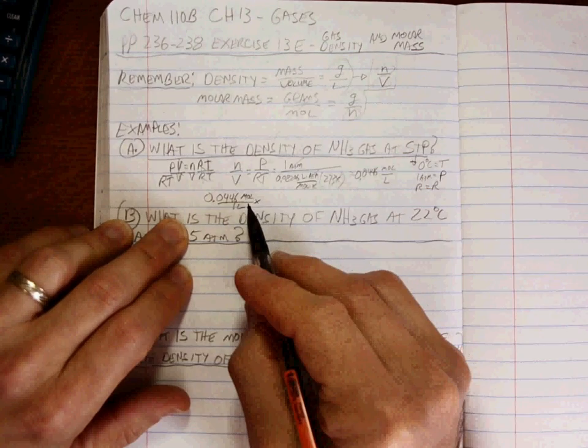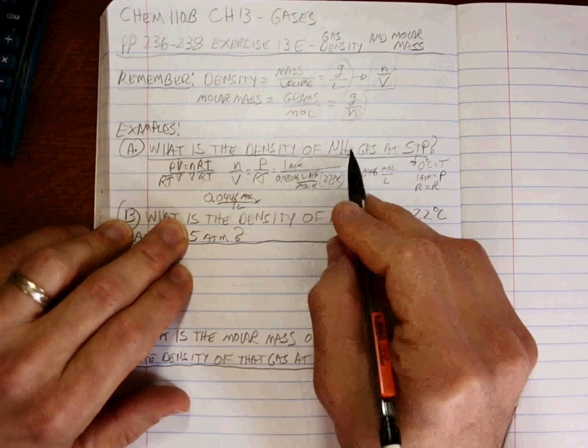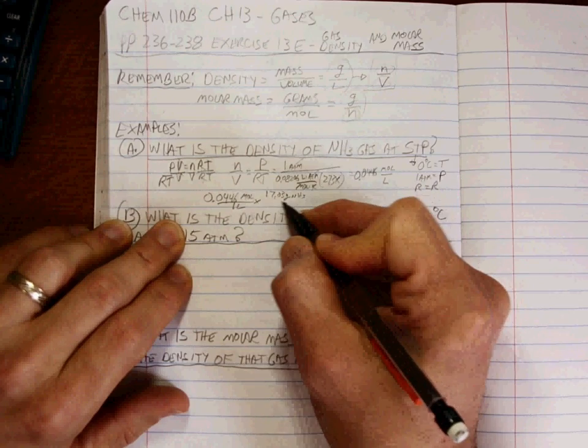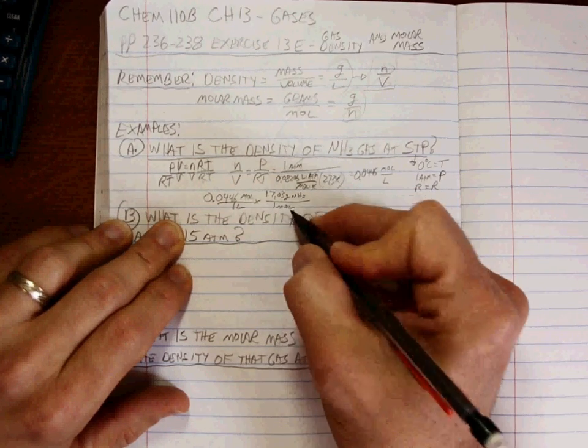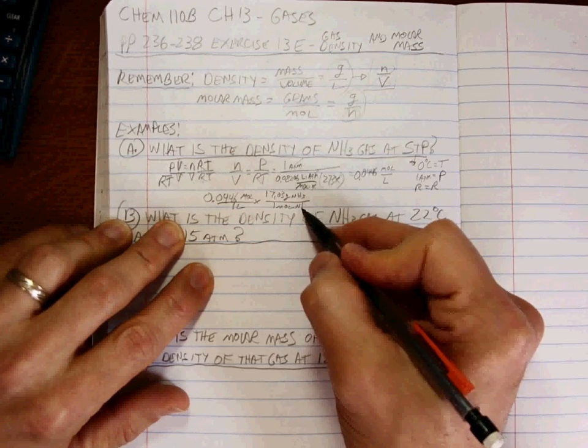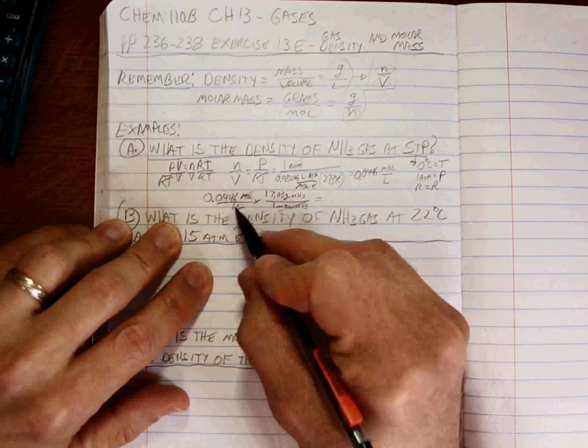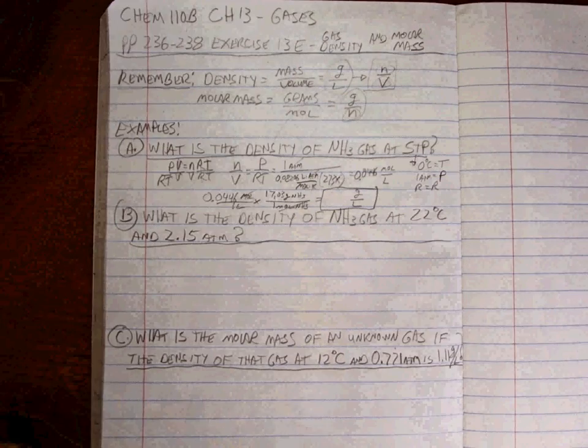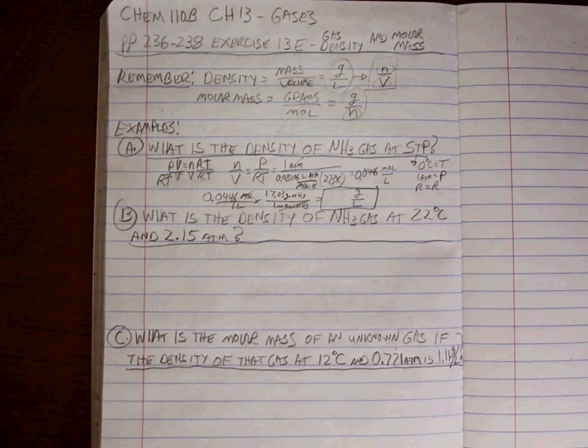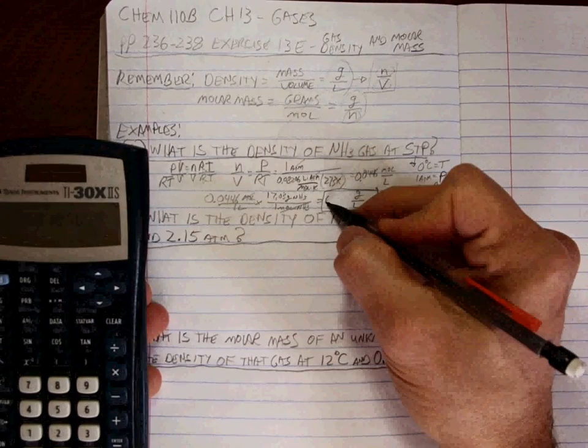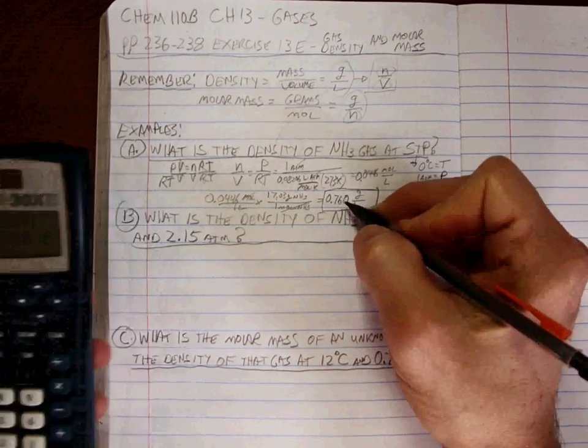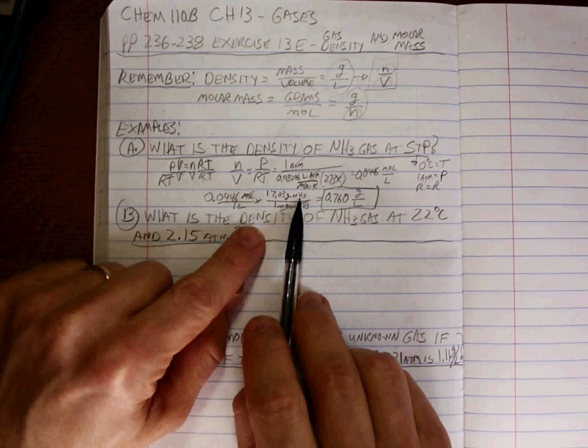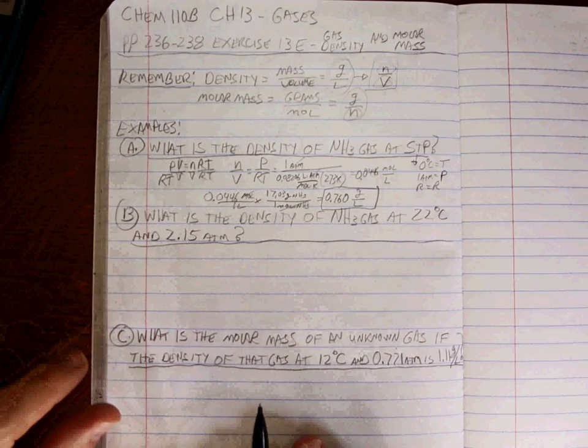So if we have 0.0446 moles per liter, how do we get to grams per liter? Multiplied by the molar mass of ammonia. It's going to be a different density for the different gases. Grams per liter is what we have left. 3 sig figs. 0.760. 1 nitrogen is 14.01. 3 hydrogens is 3 times 1.008. That adds up to that. And there you go. Done.